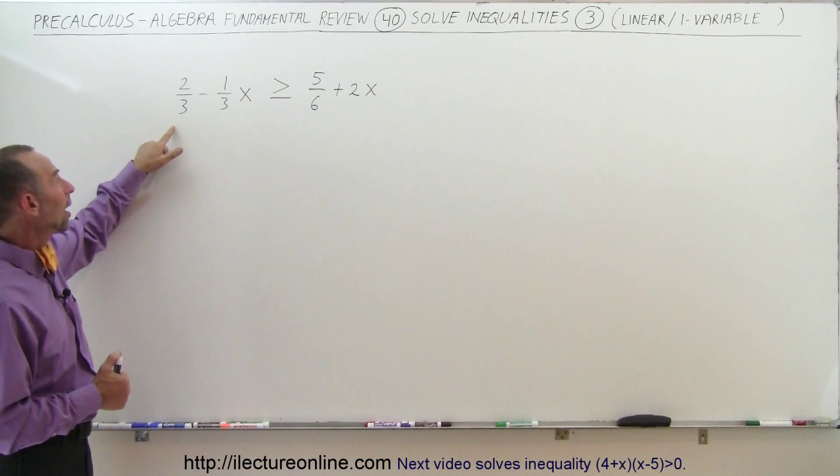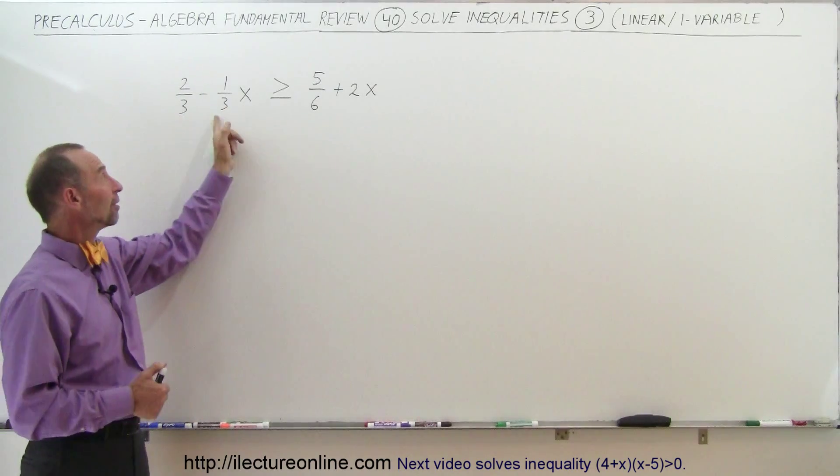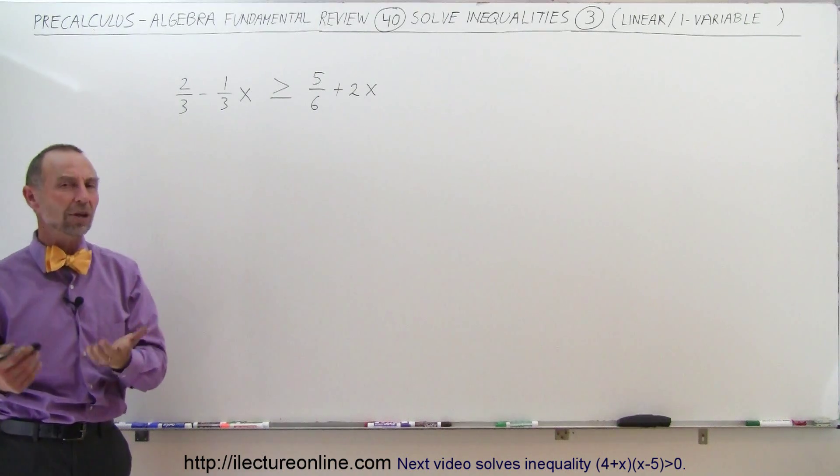So we look for the lowest common denominator. We have 3, 3 and 6. It looks like 3 fits into 6 evenly, so the lowest common denominator is 6.